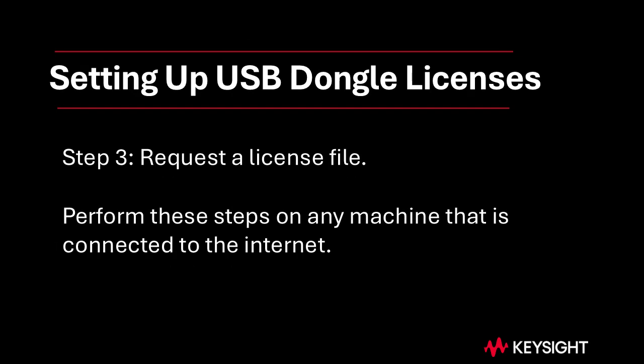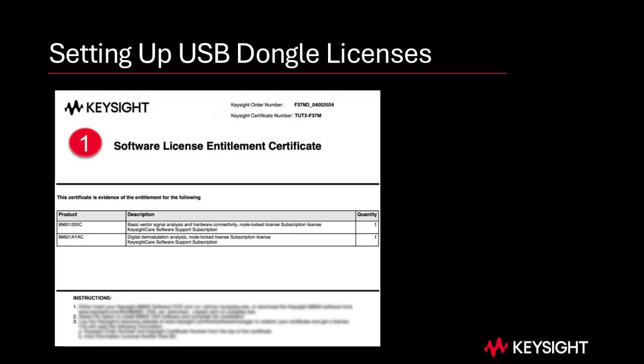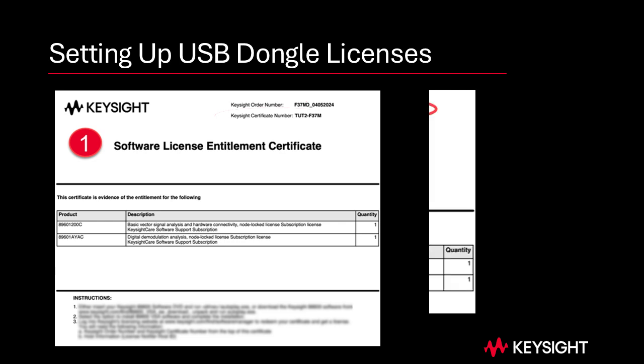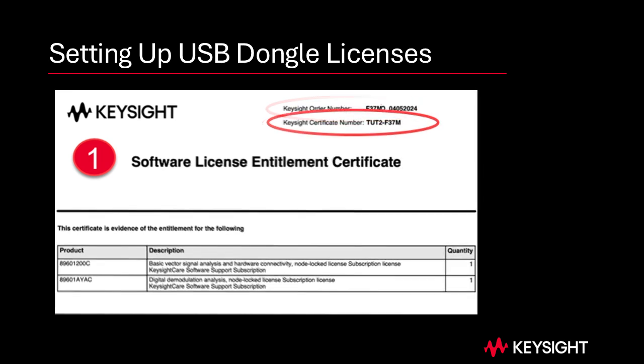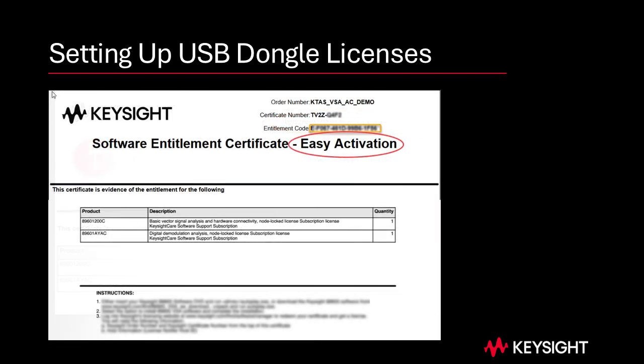Step 3: Request a license file. Follow these steps on any machine that is connected to the internet. If you have ordered a licensed Keysight product with a USB portable license, you'll receive a license certificate — paper or email — and you will be provided with the option of ordering a USB hardware key or dongle. If you don't order a new dongle, you can use one you already have. Note the order number and certificate number shown on the certificate. If your certificate has the words Easy Activation in its title, see the separate video on Easy Activation for license activation instructions.